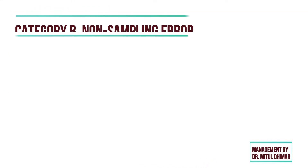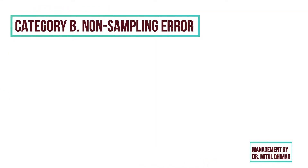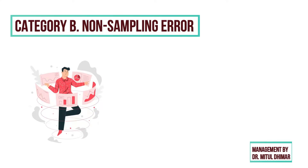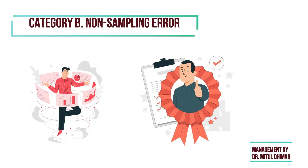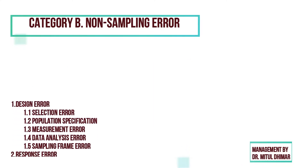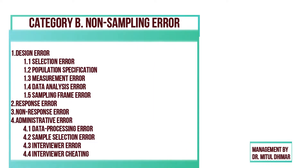Category B: non-sampling error. The non-sampling error refers to an error that arises from the result of data collection which causes the data to differ from the true values. We are going to study the following types of non-sampling errors in detail.